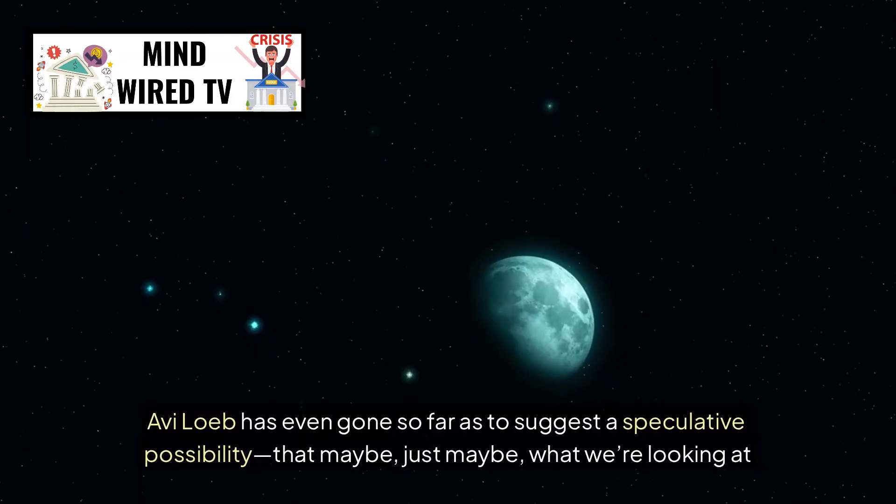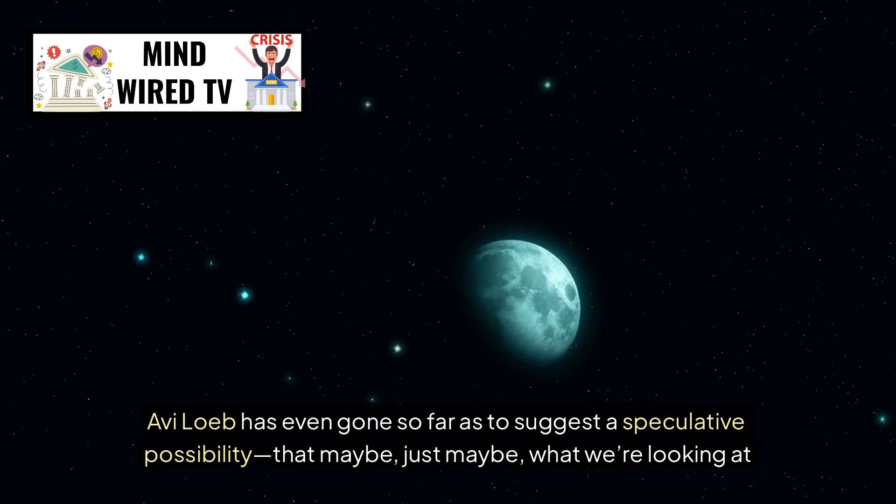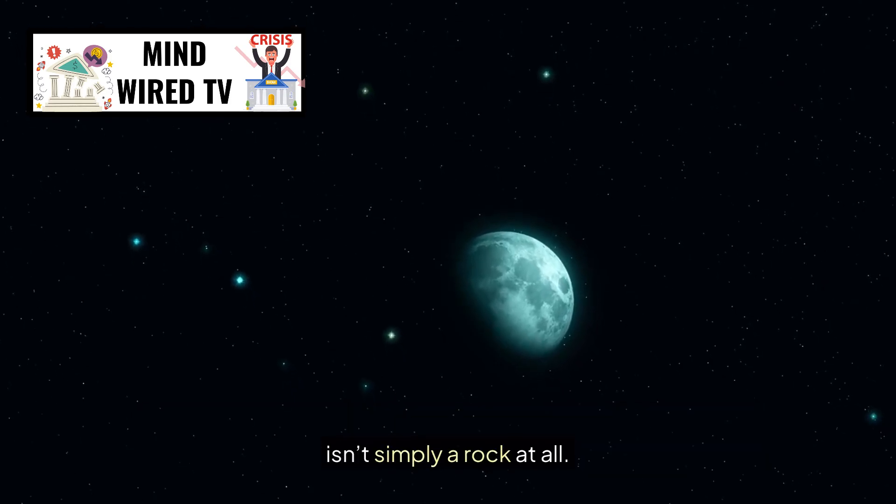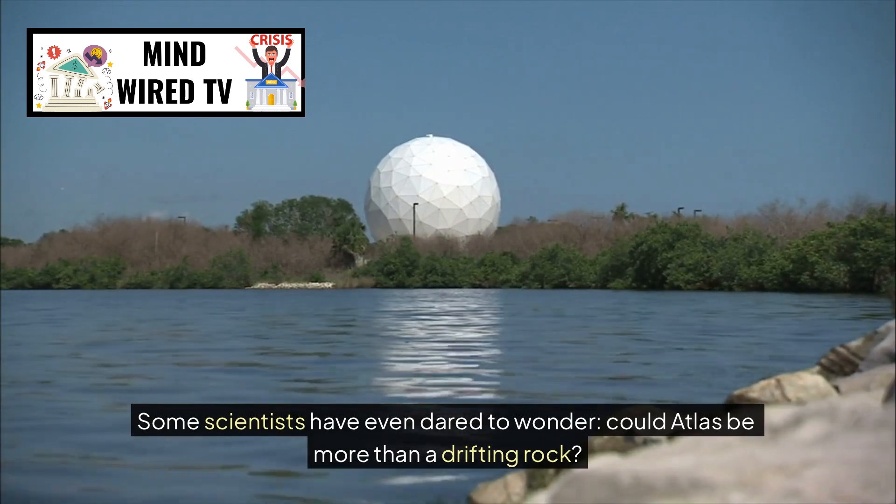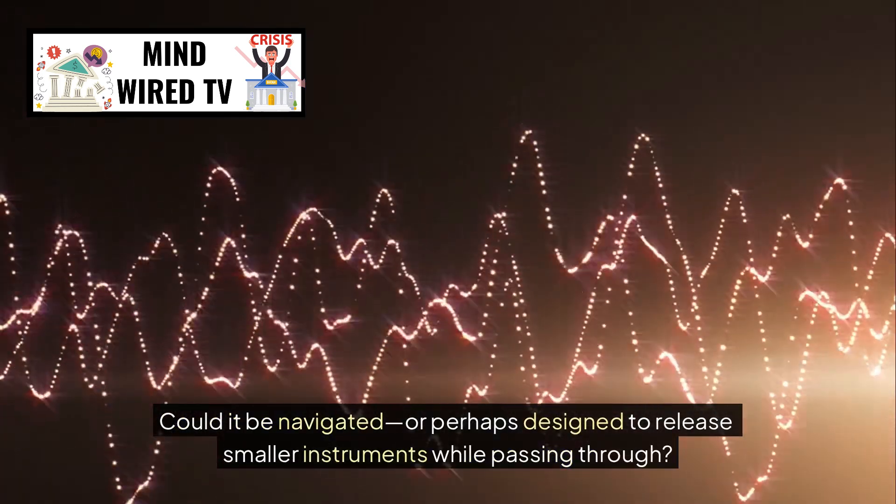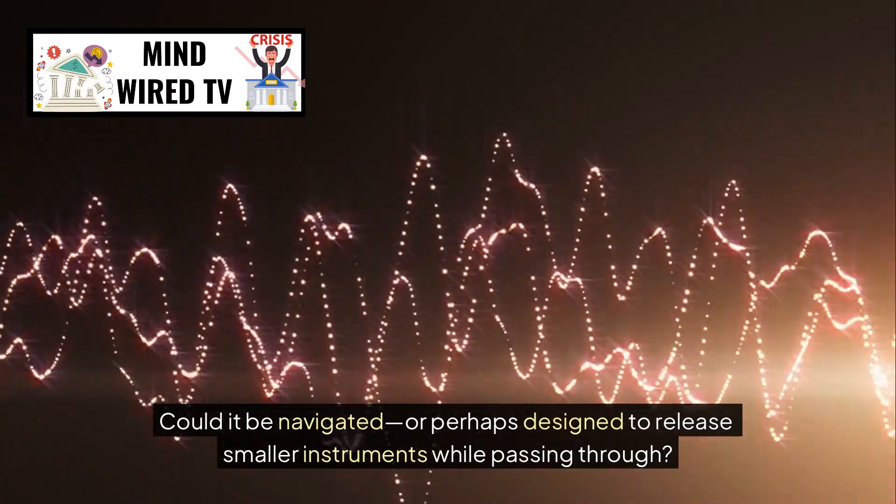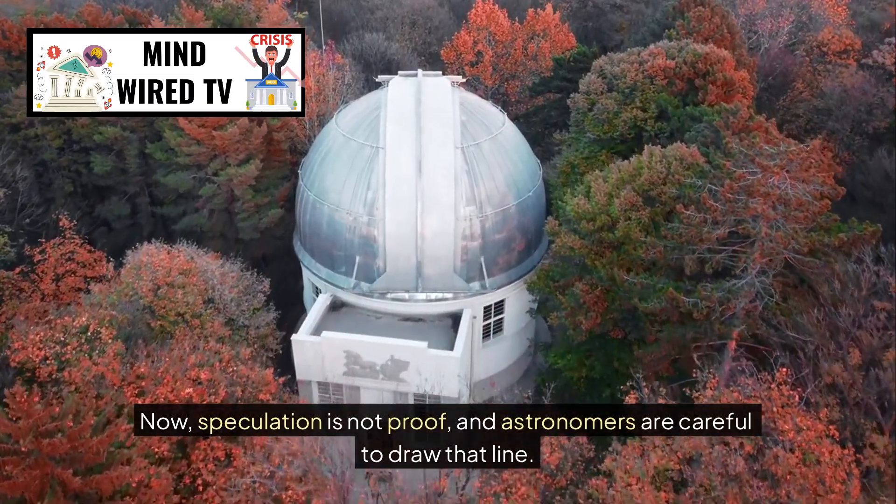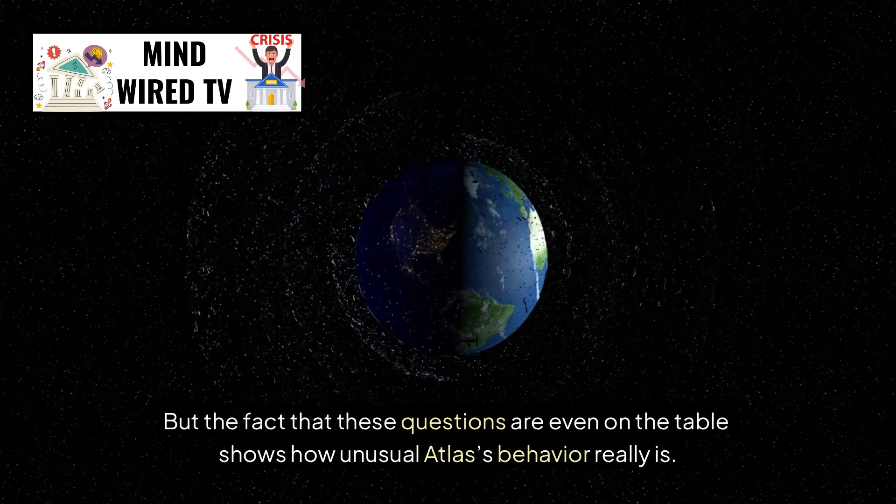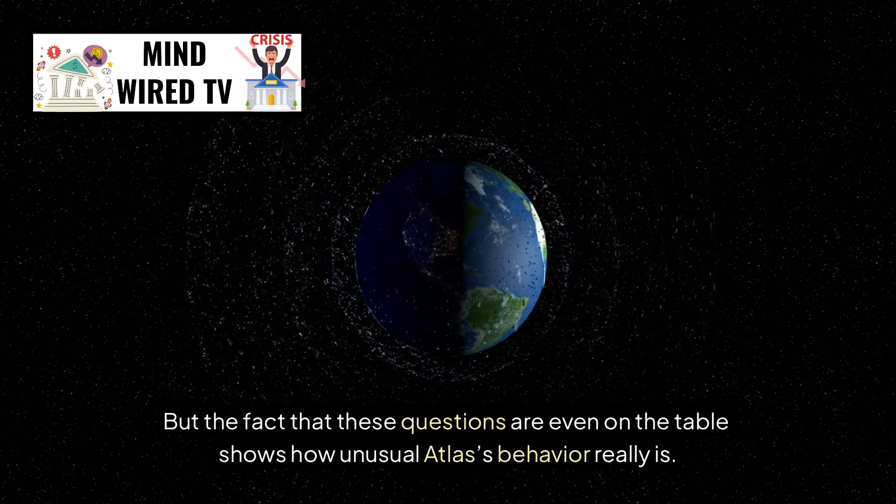Avi Loeb has even gone so far as to suggest a speculative possibility, that maybe, just maybe, what we're looking at isn't simply a rock at all. Some scientists have even dared to wonder, could Atlas be more than a drifting rock? Could it be navigated, or perhaps designed to release smaller instruments while passing through? Now, speculation is not proof, and astronomers are careful to draw that line, but the fact that these questions are even on the table shows how unusual Atlas's behavior really is.